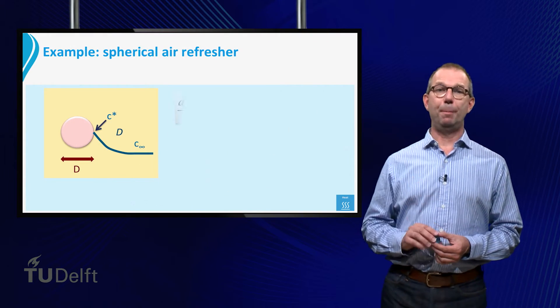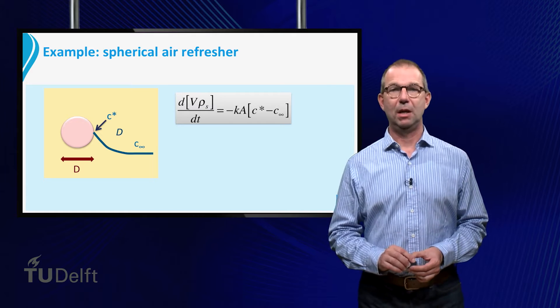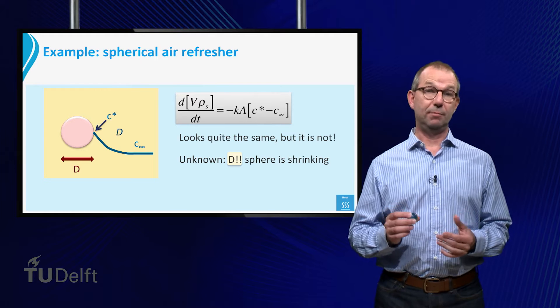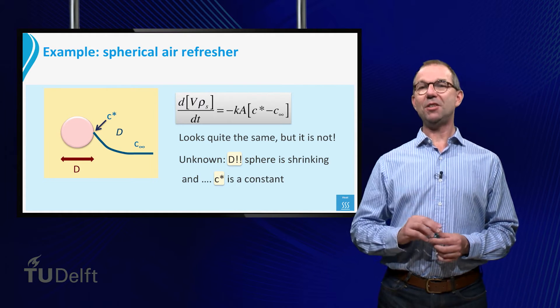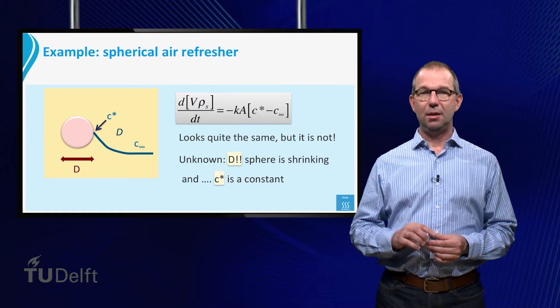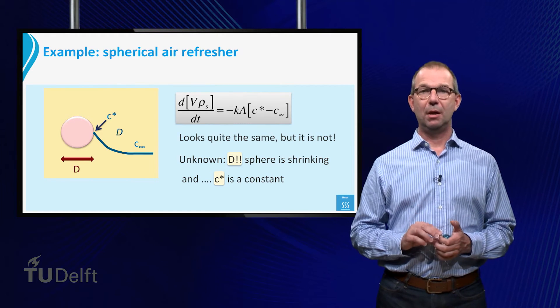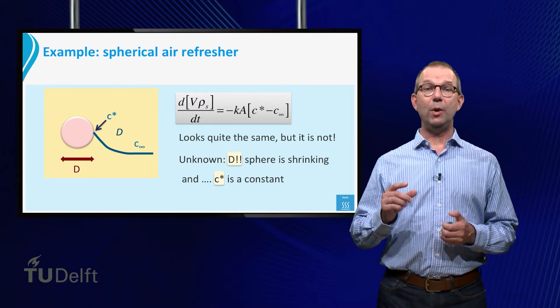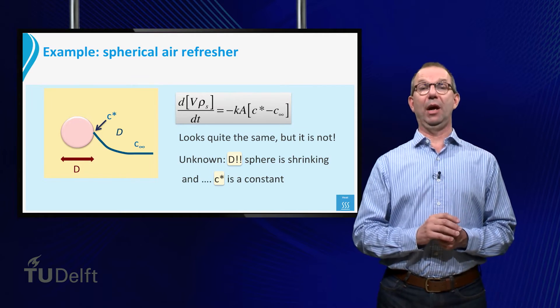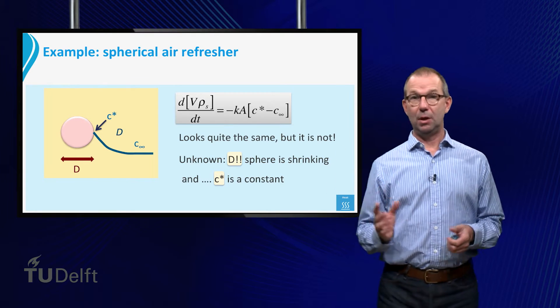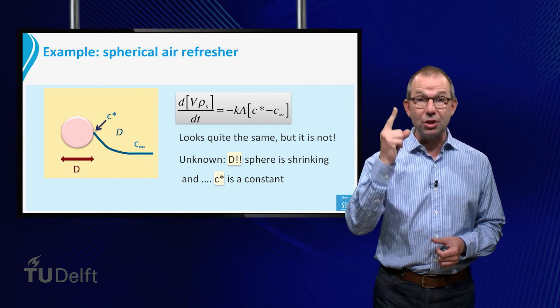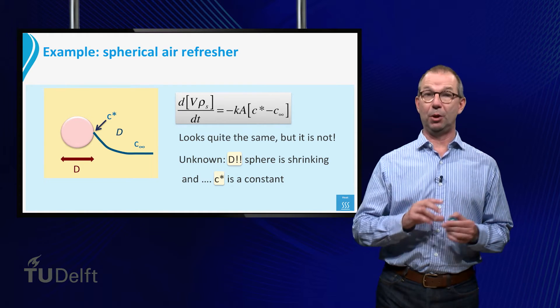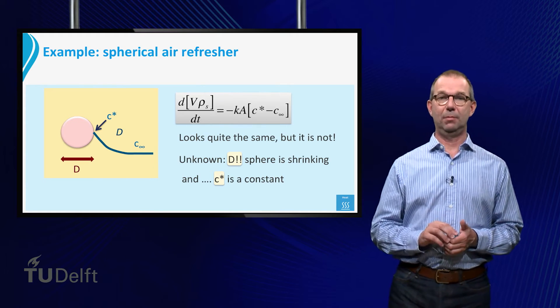So here is our mass balance for this case. This looks quite the same as the heat balance we had for the cooling sphere, doesn't it? Well actually, it doesn't. Here the variable is the sphere diameter, as we know that the sphere will be shrinking. So we need to look for where D is hidden in the equation.